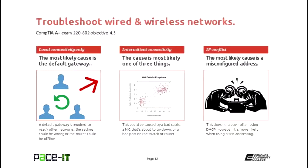Suppose you're experiencing intermittent connectivity. The most likely cause is one of three things: a bad cable — they do go bad; a network interface card or controller that's about ready to go bad; or a bad port on the switch or router. It's time to try and narrow it down by testing each device or item. If nobody else is experiencing problems, I would probably look at the cable first.